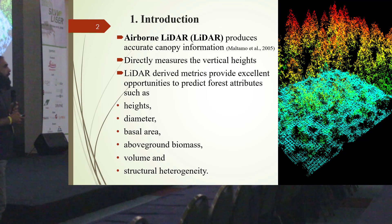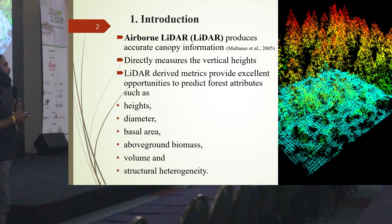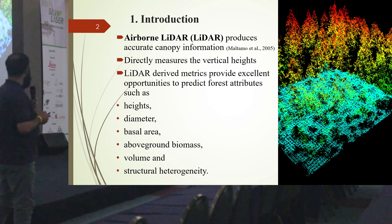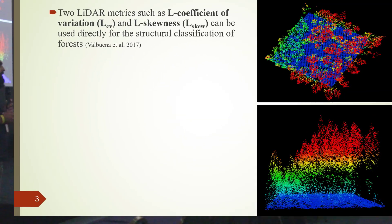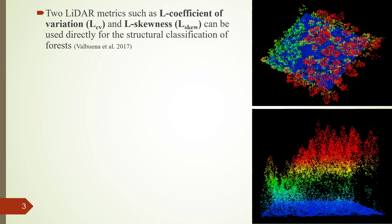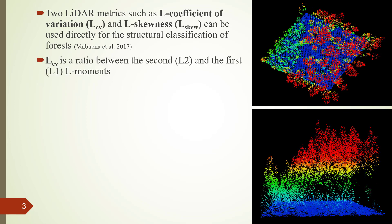For example, volume, basal area, stand structure, and many more. I will mention two LiDAR metrics — the L coefficient of variation and L skewness — that can be used to obtain forest structures directly from LiDAR data.